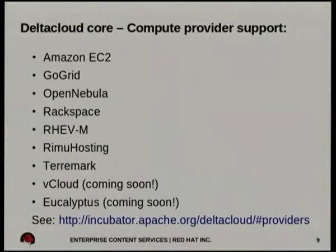Storage and networking are concepts that haven't been fully defined in the API yet but are being worked on now. The current provider support list includes vCloud and Eucalyptus, still work in progress, but the idea is to support as many public clouds as possible and any private cloud implementations as well.